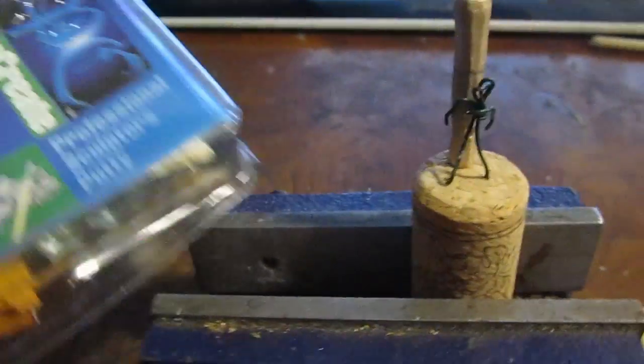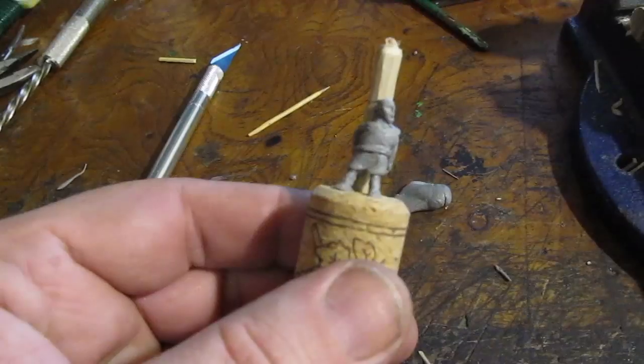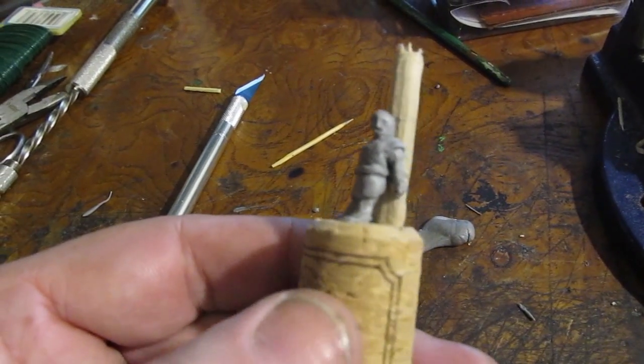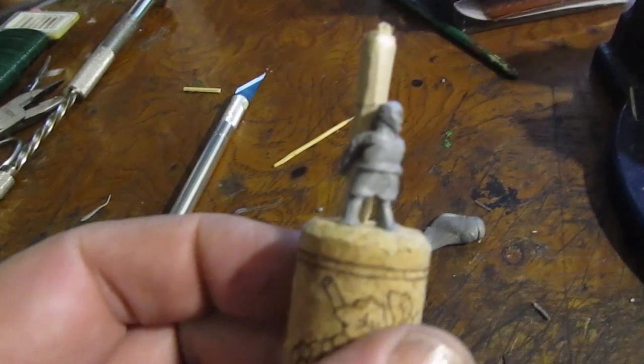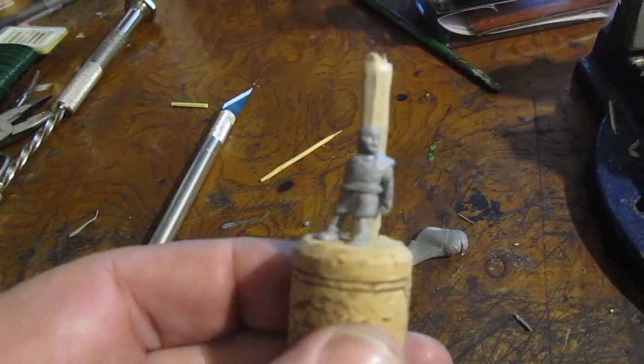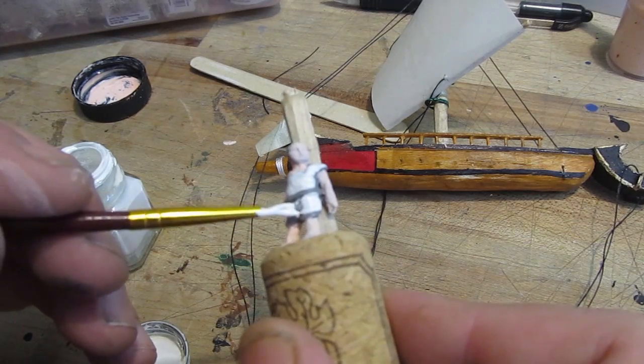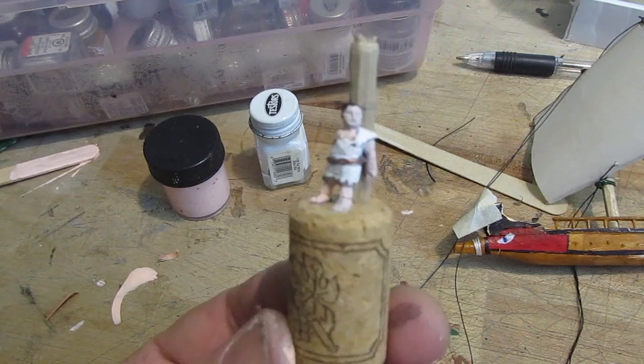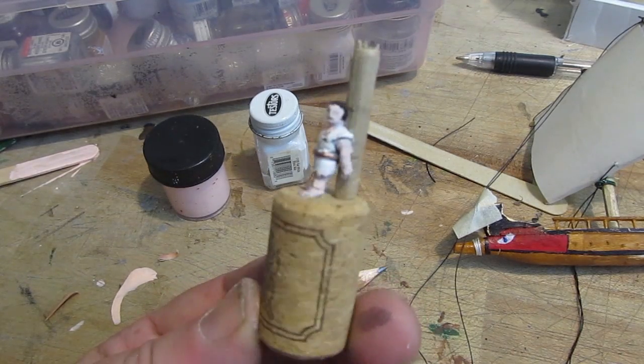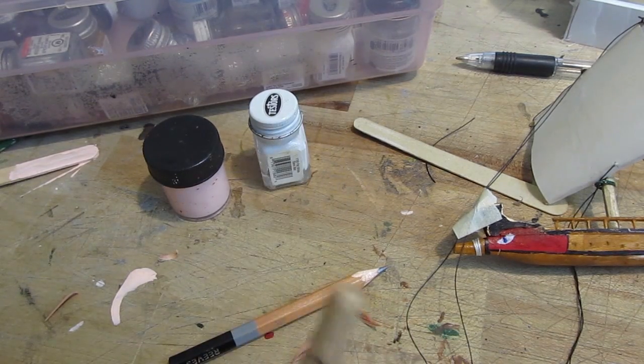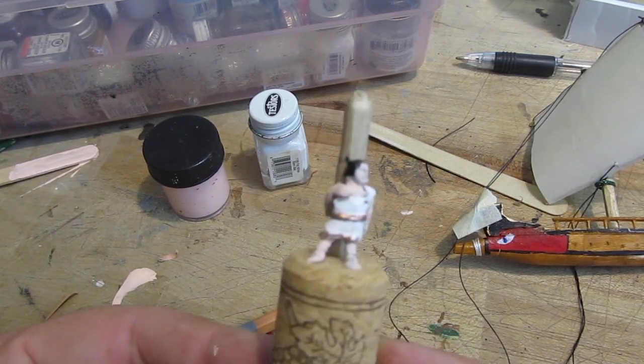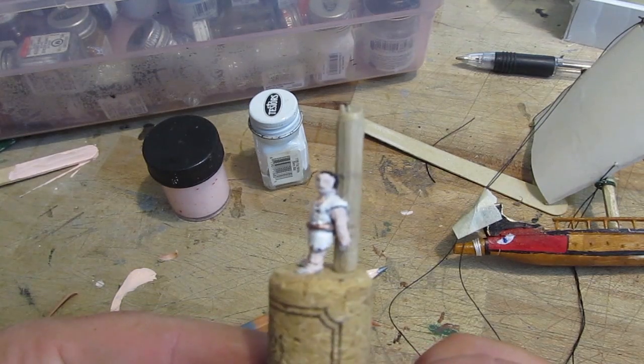Now, for Odysseus, I'm using a material called Procreate. It is a two-part epoxy resin. You mix the two parts together, and then you've got a couple of hours to sculpt something, and then it will set, it'll harden like plastic. So, I made this little fake beam here on a cork, sculpted out Odysseus, painted him, and he's ready to go. And then I will remove that and put it onto the ship.